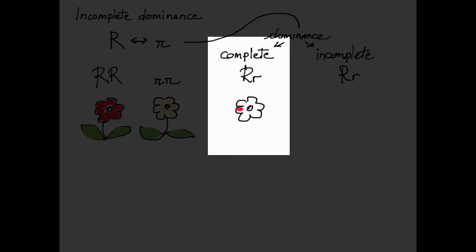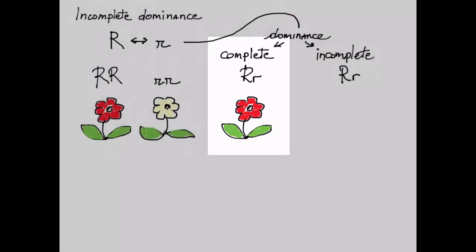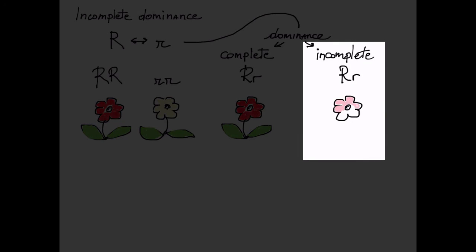In the case of complete dominance, a single big R allele is sufficient to confer the same red color found in the big R homozygous. With incomplete dominance, however,